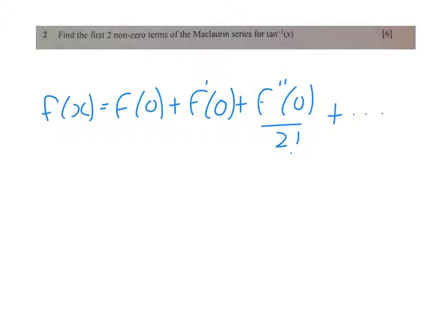The Maclaurin series is f(x) equals f(0) plus f'(0) plus f''(0) over 2 factorial and so on.